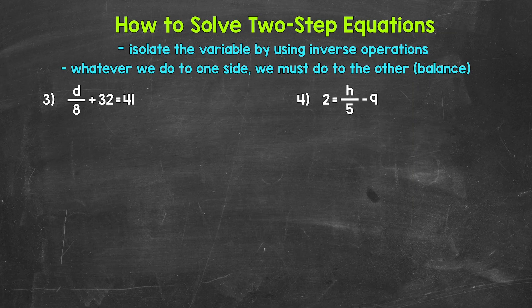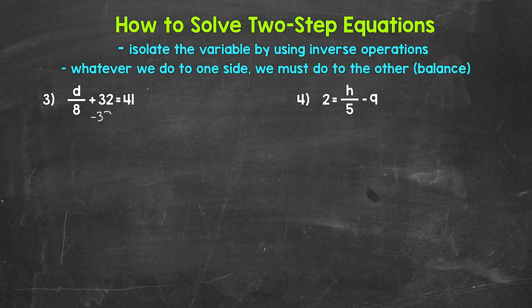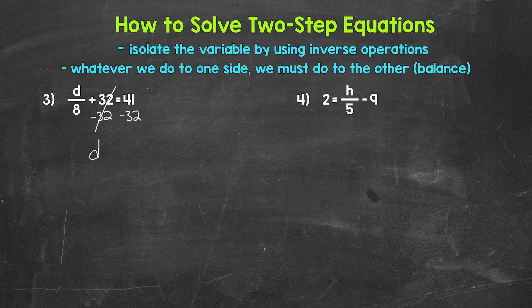Let's jump into number 3, where we have d divided by 8 plus 32 equals 41. We need to isolate that variable of d using inverse operations, going in the reverse order of operations. We need to undo the addition first. The inverse operation of addition is subtraction. So let's subtract 32 from both sides. The 32s cancel each other out on the left side, so we have d divided by 8 equals 41 minus 32, which gives us 9. So d divided by 8 equals 9.